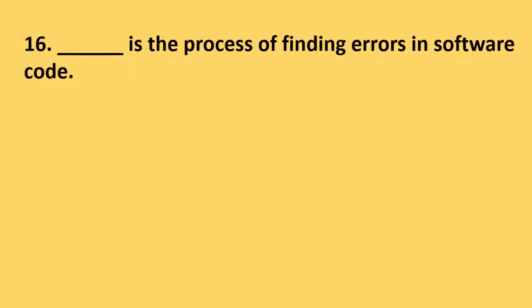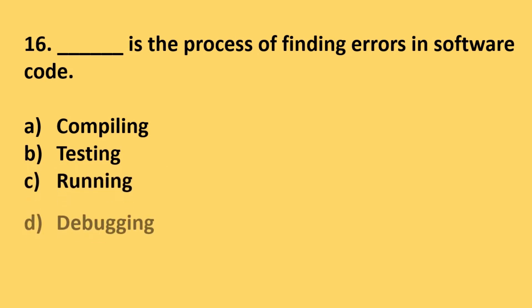Question number 16: This is the process of finding errors in software code. Options are compiling, testing, running and debugging. The correct answer is option D, debugging. Debugging is the process of finding errors in software code.